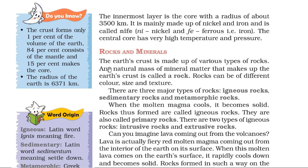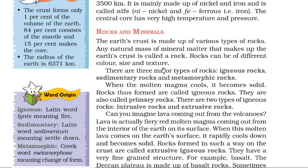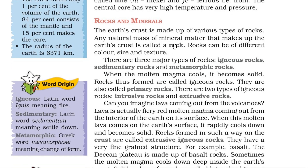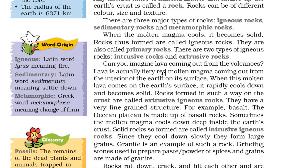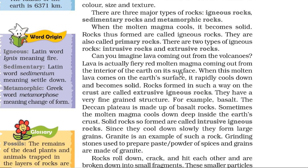The earth crust is made up of various types of rocks. Any natural mass of mineral matter that makes up the earth crust is called a rock. They can be of different types, colour, and texture. Rocks are divided into 3 main categories: igneous rocks, sedimentary rocks, and metamorphic rocks.